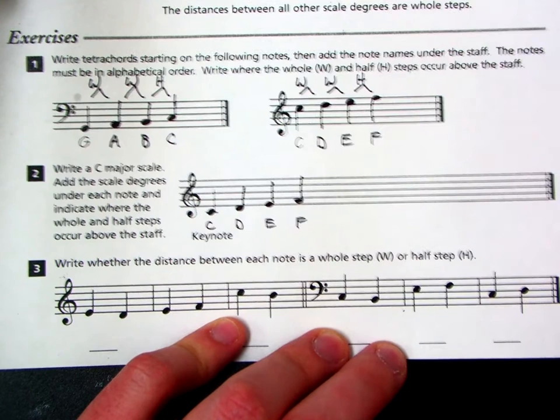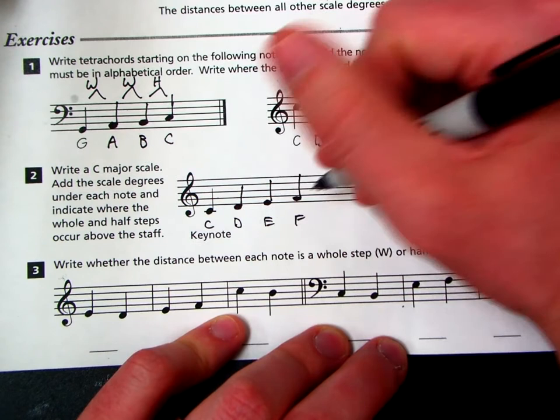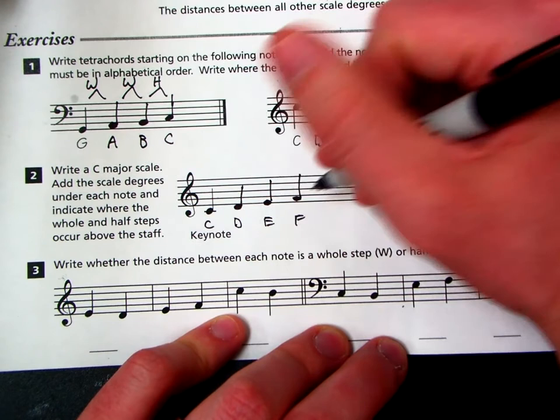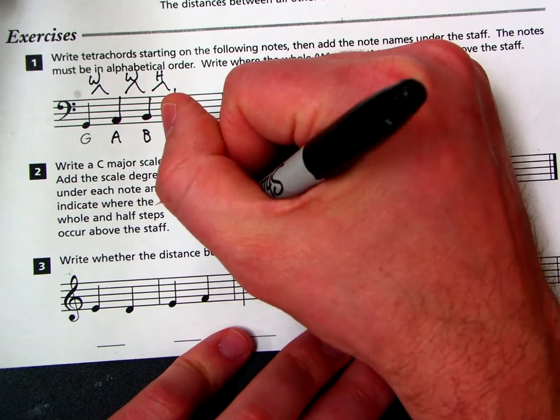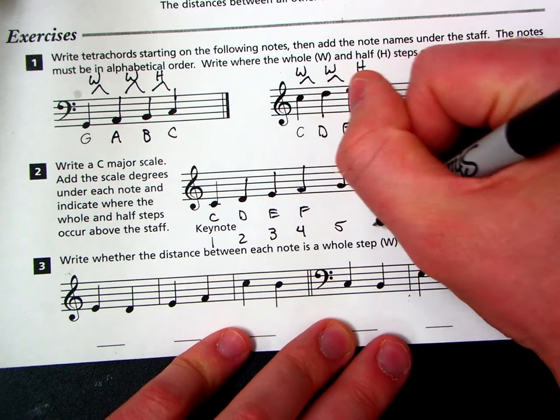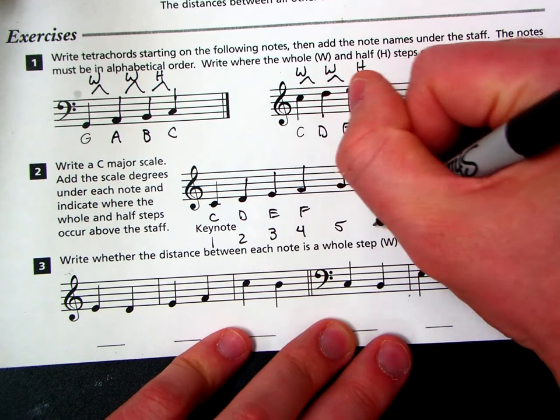Now we need a whole step to find out what the next tetrachord starts on. So a whole step from F is G. Then a whole step from there is A, whole step, B, and then a half step to C. Now it wanted us to write the scale degrees, and I started writing the note names, so I'll write them down here. Scale degree one, two, three, four, five, six, seven, and eight.